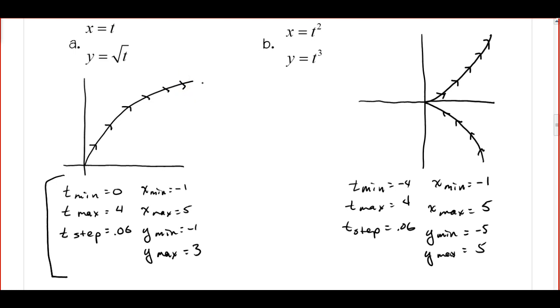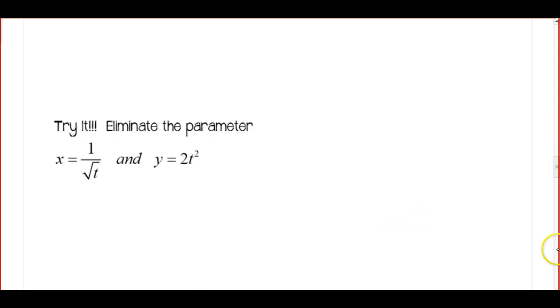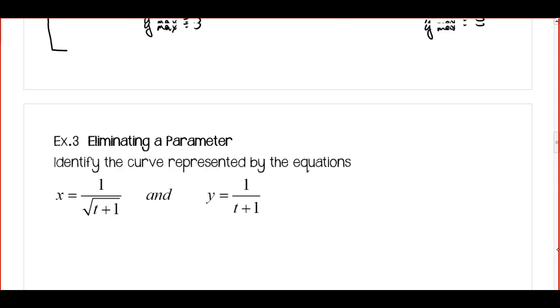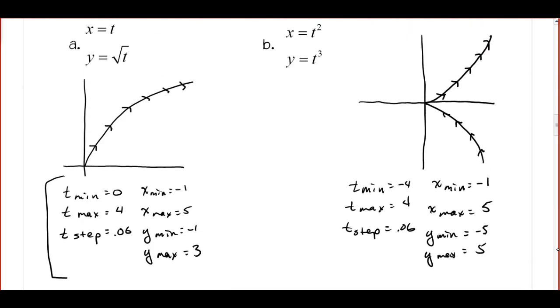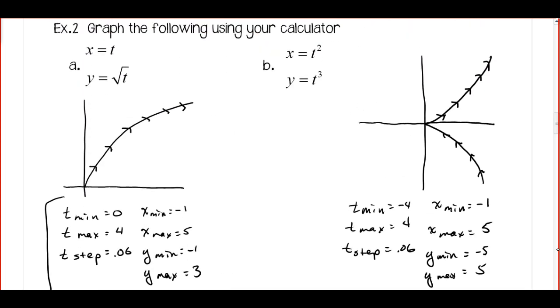And then for Part B, kind of an interesting graph which would be really difficult to graph if we were doing rectangular equations. We would have to graph it in two parts. If we use a Tmin of minus 4 and a Tmax of 4, again our Tstep is 0.06. You can experiment with that. And here's my values for Xmin, Xmax, Ymin, and Ymax. Pause as needed.